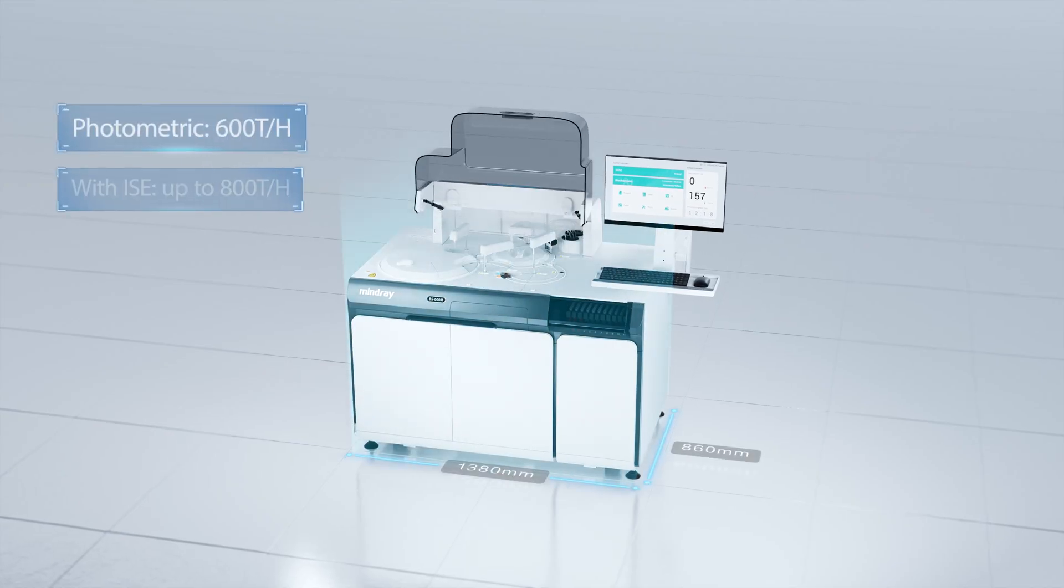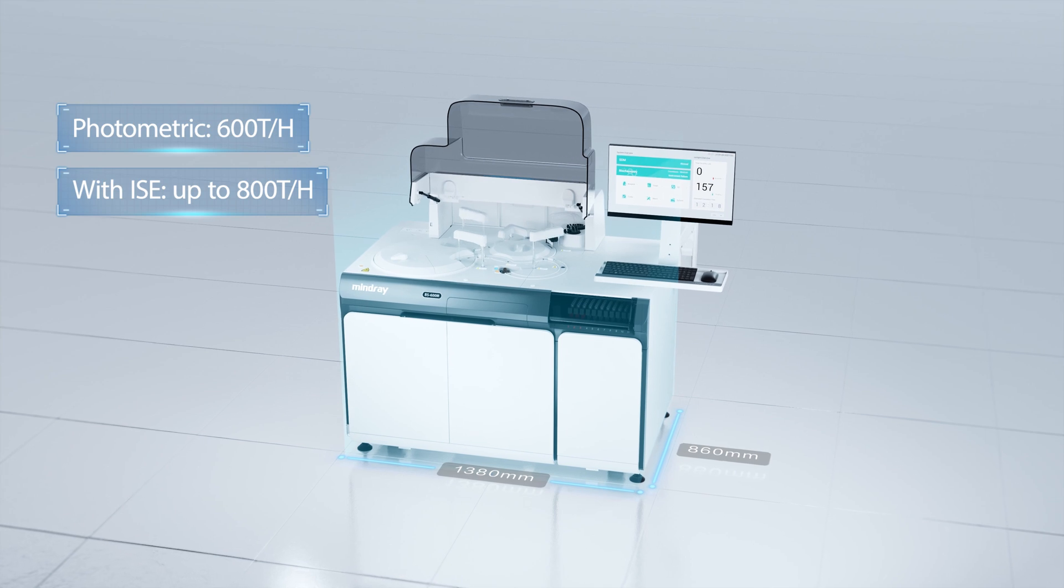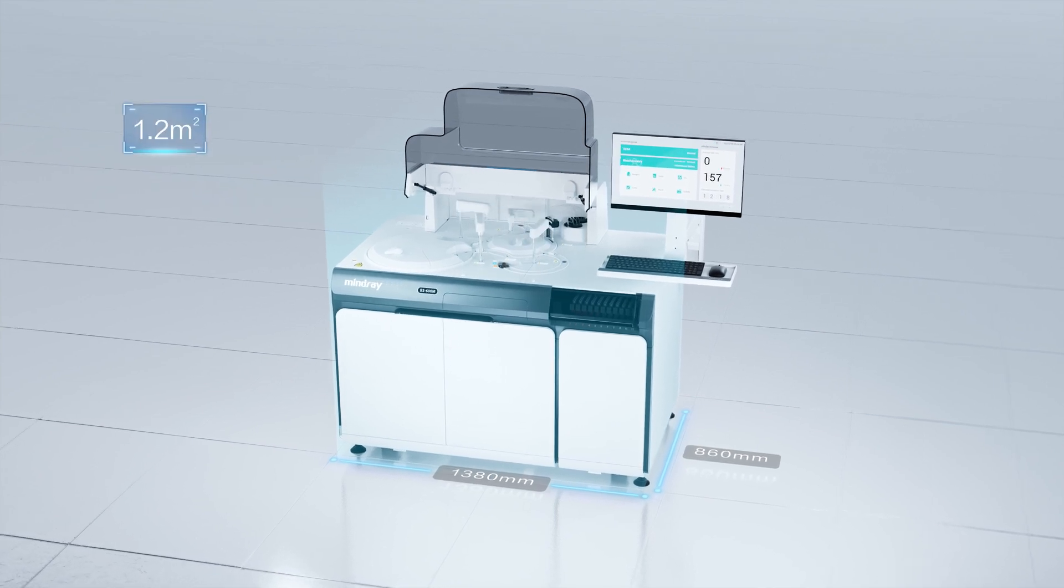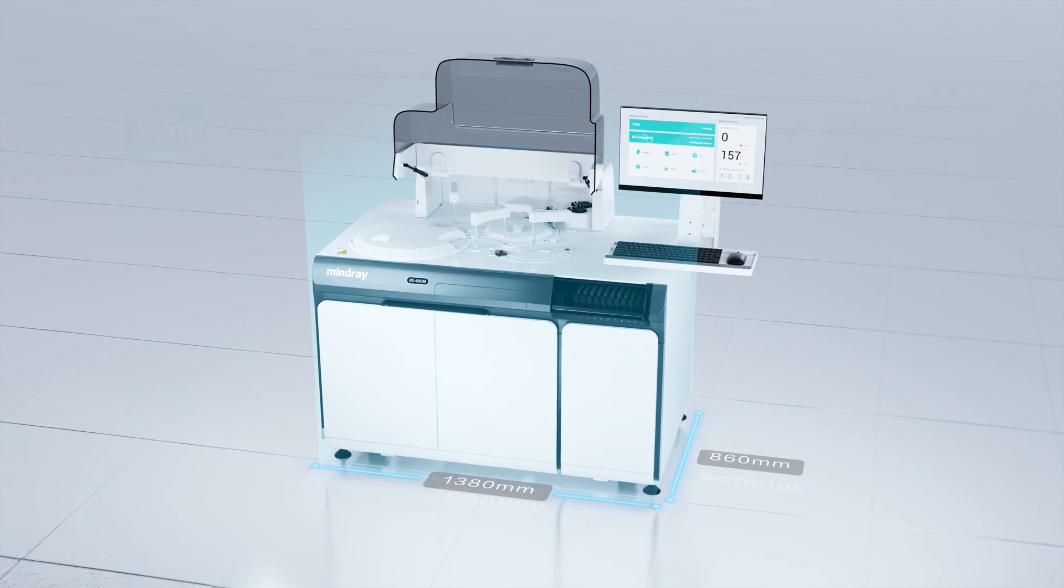BS 600M is a compact chemistry testing system that can deliver maximized throughput in a minimal footprint with 1.2 square meters.